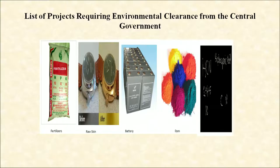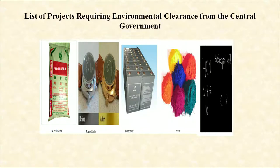A few other industries requiring EIA include integrated paint, viscose staple fiber and filament yarn, storage batteries, all tourism projects, thermal power plants, mining projects, and highway projects passing through ecologically sensitive areas such as national parks, sanctuaries, tiger reserves, and reserve forests. Also included are tar roads in the Himalayas and forest areas, distilleries, raw skin and hide, pulp, paper and newsprint, dyes, cement, foundries, electroplating and meta-aminophenol.